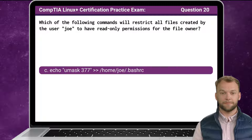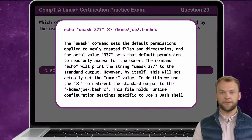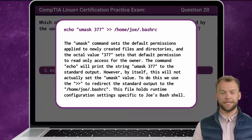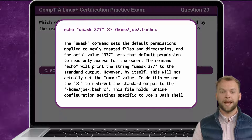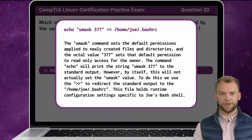The answer is C. The umask command sets the default permissions applied to newly created files and directories, and the octal value 377 sets the default permission to read-only access for the owner. The echo command will print the string umask 377 to the standard output. However, by itself, this will not actually set the umask value. To do this, we use the double greater-than angle brackets to redirect the standard output to the .bashrc file for Joe. This file holds runtime configuration settings specific to Joe's Bash shell.